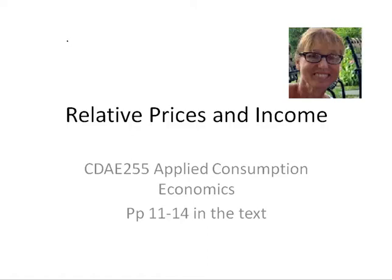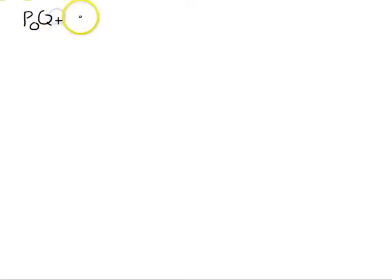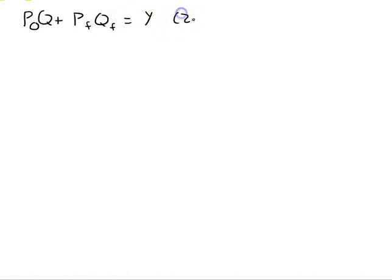Hi class, today we're going to cover relative prices and income on pages 11 through 14 in your text. If you remember from last time, we were talking about budget constraints and budget lines. Our budget constraint said the price of all other goods times the quantity of all other goods plus the price of food times the quantity of food exhausted our income, and that was equation 2.1.